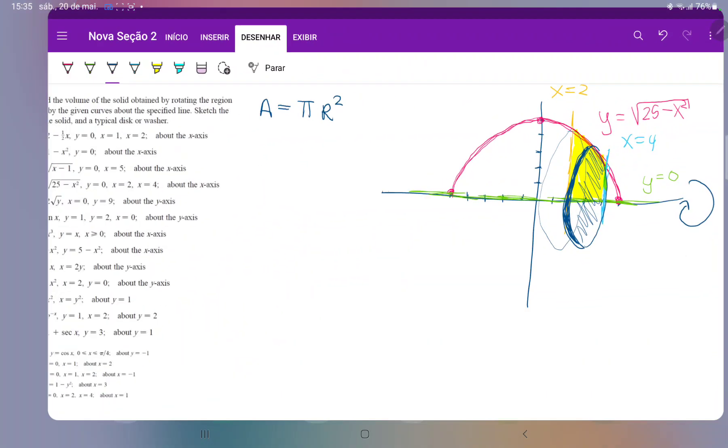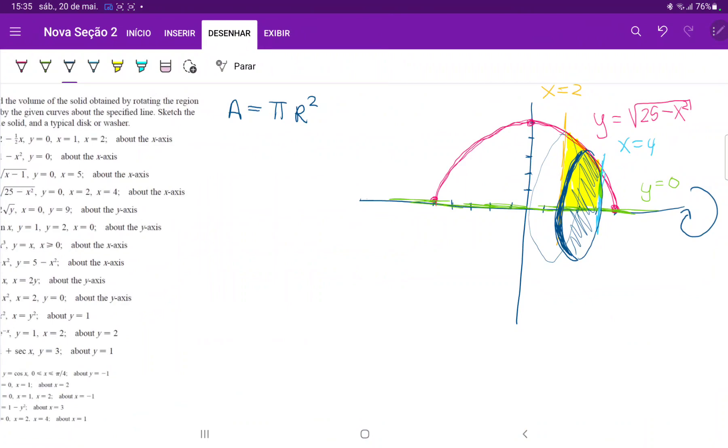So if the radius constantly changes, then that means that the radius is a function of x. Because the height depends on where I'm at in my x-axis. So we can see that the radius is described by the pink curve, right?